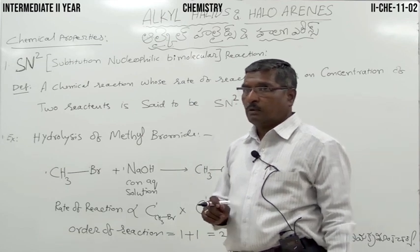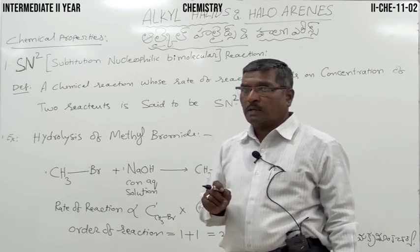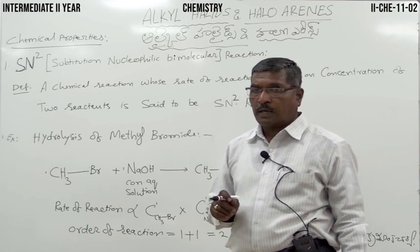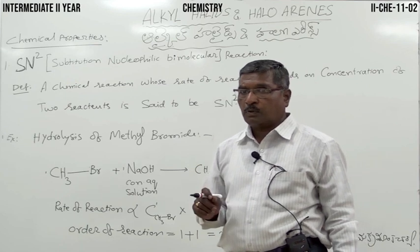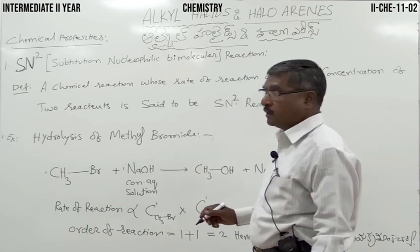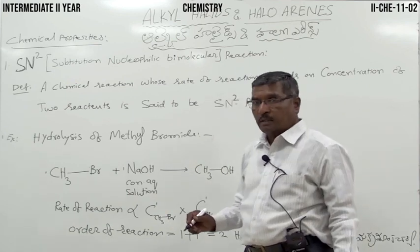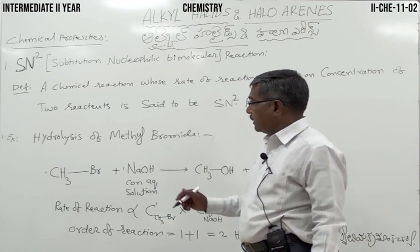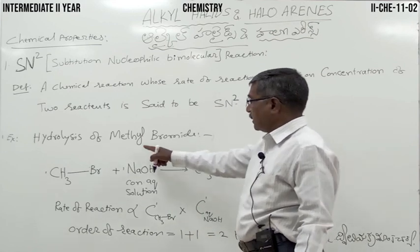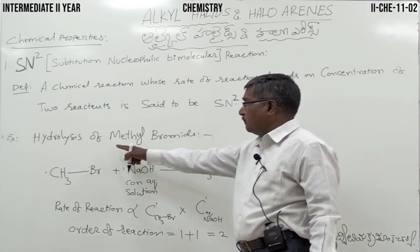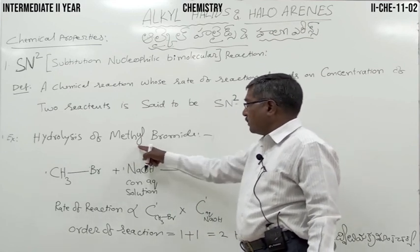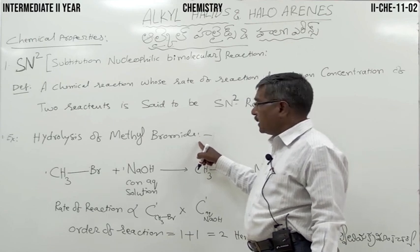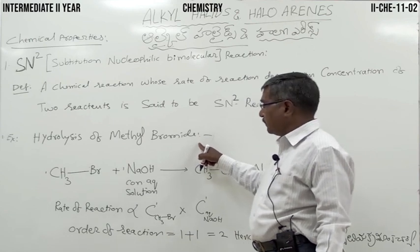According to the law of mass action in chemical kinetics, the rate of reaction is directly proportional to the product of concentrations of reactants. The best example is the hydrolysis of methyl bromide.